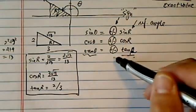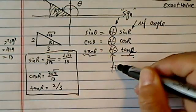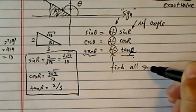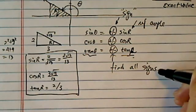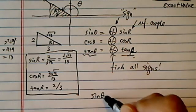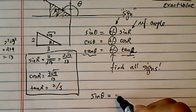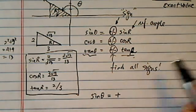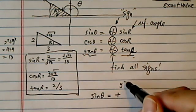Now next thing we're going to do is find all the signs. We're going to find all the plus and minus signs. So let's get started. Sine theta in quadrant 2 is a positive number because it's decided by the y value.